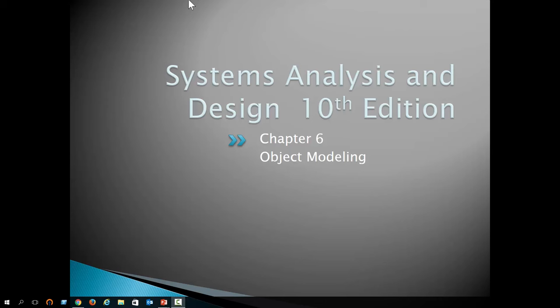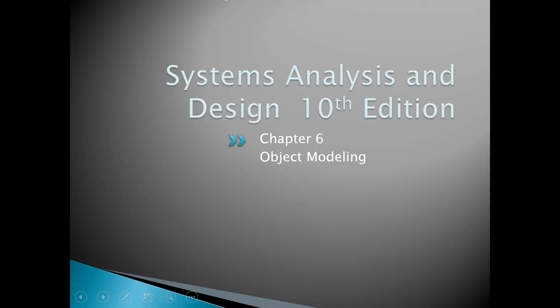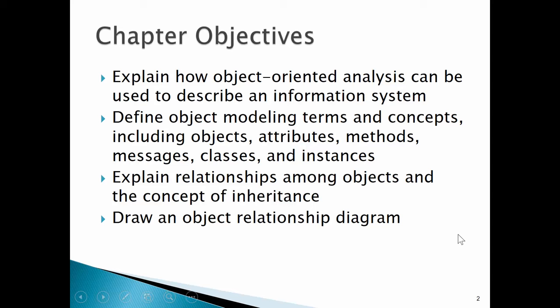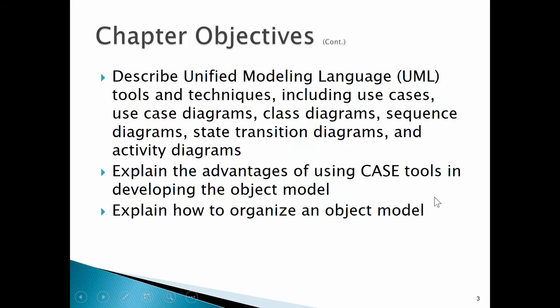The reason we like object modeling is because it parallels object-based programming. So when we create documentation that lists an object, lists its attributes, lists its methods, we're giving a programmer the information already in an object-based model that they understand. So let's take a look. First, the objectives — we're going to get through these in the next two lecture videos, this one and part two.